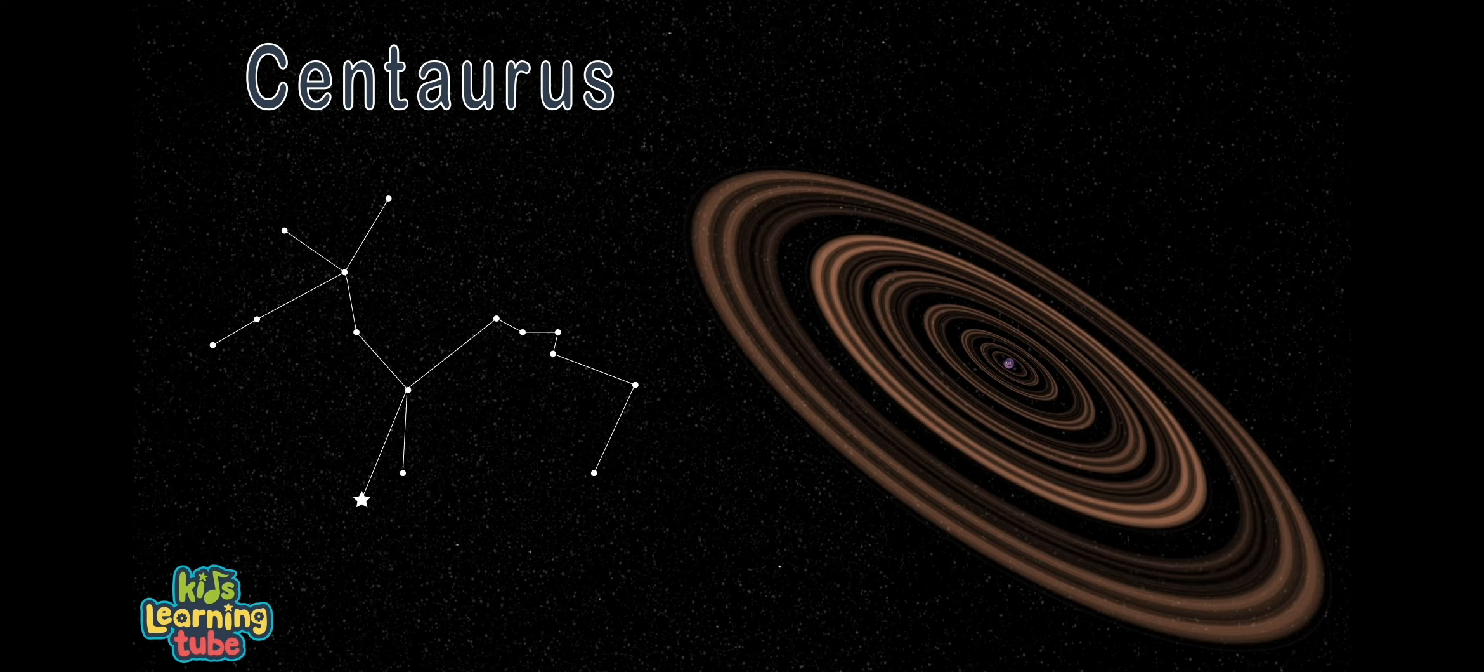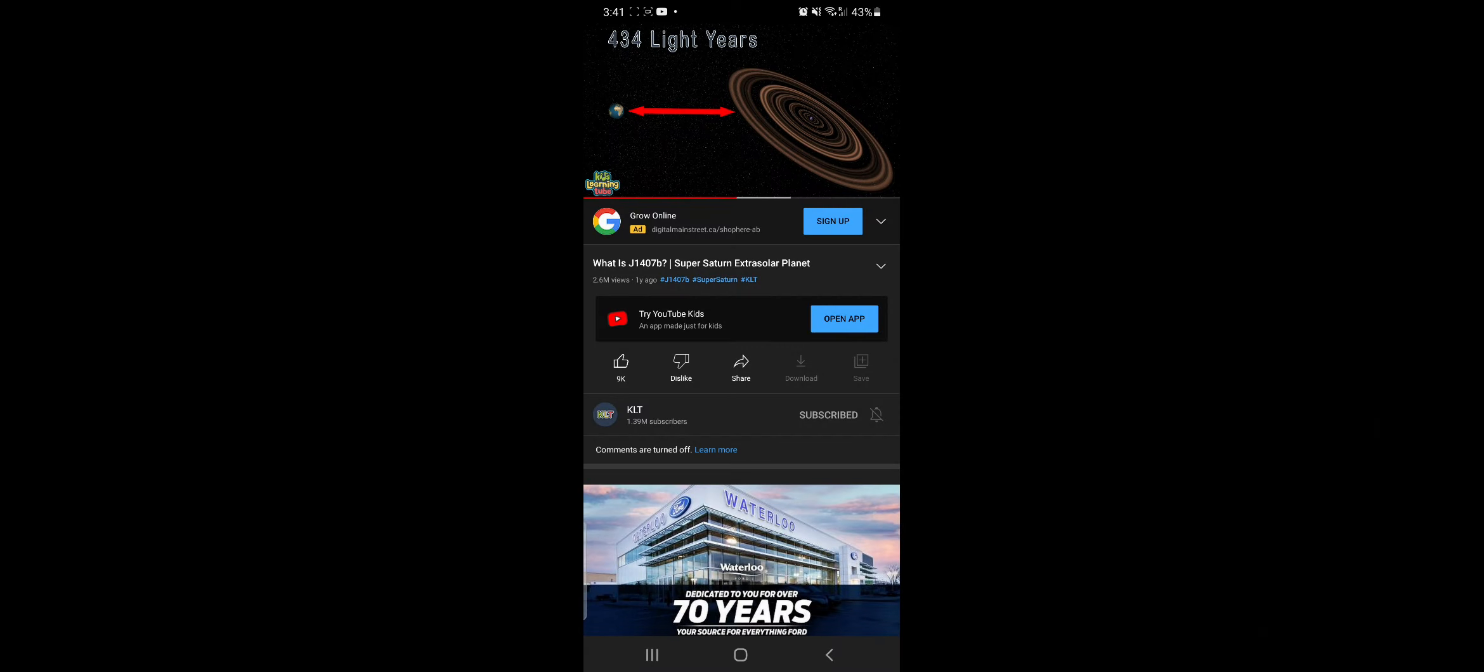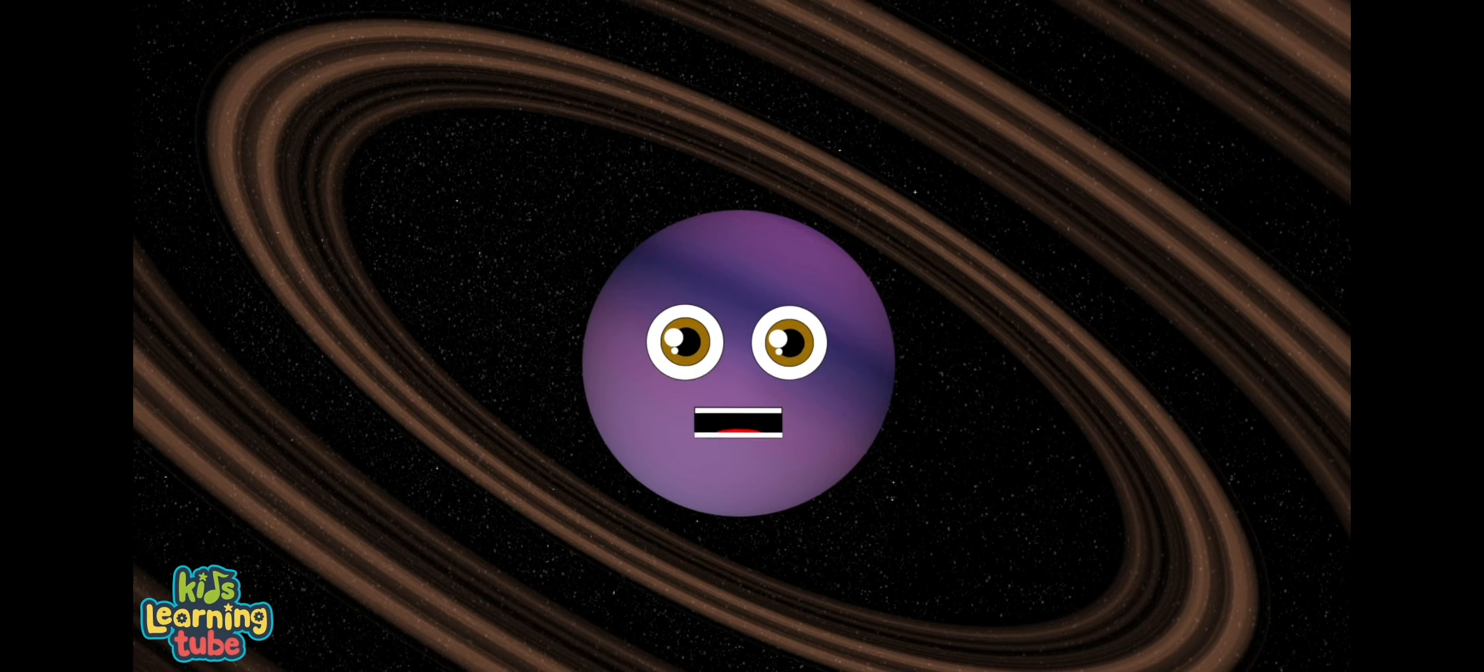I'm within the constellation of Centauri. It's about 434 light years from the Earth, but I don't fuss. No one knows if I'm a gas giant or a brown dwarf with rings. I'm sure you'll find out more about me while I do my thing.